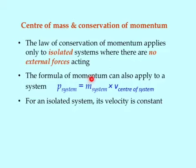The formula of momentum can also apply to a system of objects. So the momentum of the whole group of objects is equal to the mass of the whole system times the velocity of the center of the whole system.